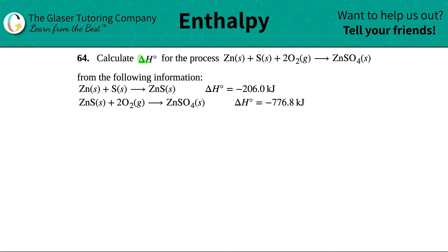Number 64, calculate the delta H for the process. They give us this formula that we need to create: Zn plus S plus 2 O2 yields Zn SO4, and then they give us the two equations that we need to use with their corresponding delta H values.